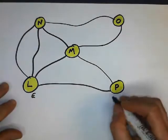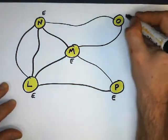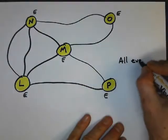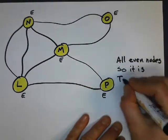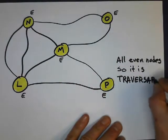And let's look at another one. So I've got this one, even, even, even, even, even. And they're all even nodes. Therefore, it is traversable. And it's going to make a circuit.